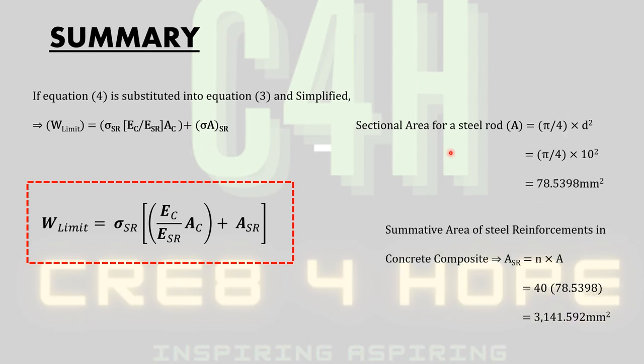Since the total number of reinforcements in the concrete composite is 40, the total area of the steel reinforcement will be equal to the number of reinforcements times the cross-sectional area for a steel rod. So 40 times 78.5398 will yield 3141.592 millimeters squared.